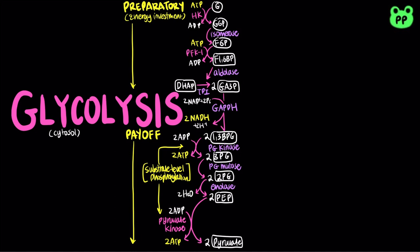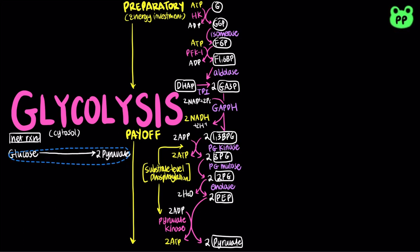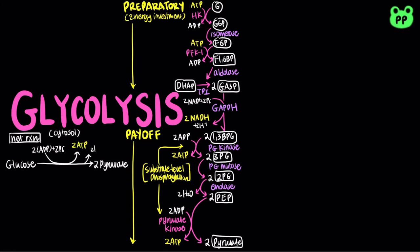Combining the preparatory phase and payoff phase of glycolysis, the net reaction involves the conversion of glucose into 2 pyruvate molecules, with a net production of 2 ATP, 2 NADH, and 2 water molecules.